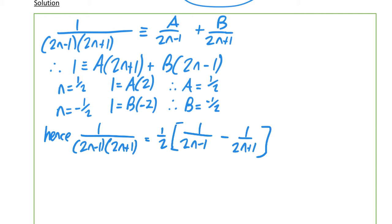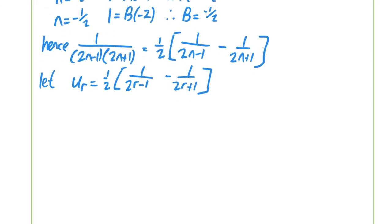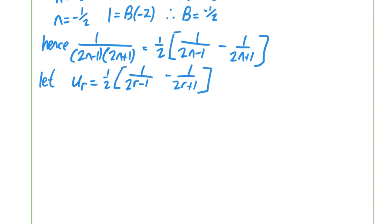From now on we're going to let u_r be our general term. We're going to let r equal 1, 2, 3, all the way up to n and look at what happens. Setting it out this way makes it easy to see what's going on.